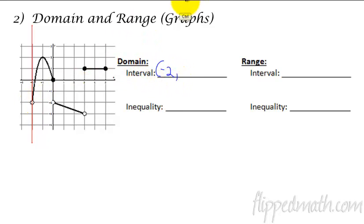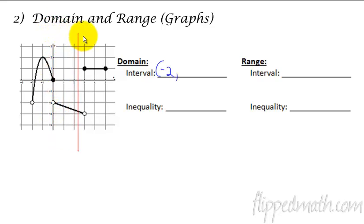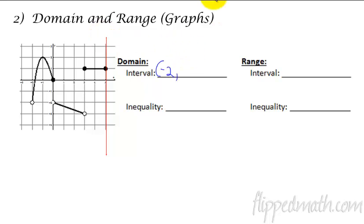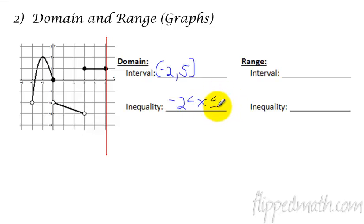Then I continue until I get — there is a break there, but there's not a break in the x values. This x value and that x value are still the same thing, so there's never a break. And then I get all the way to here. I have an open circle and a closed circle, but there's no gap in x values. And then this is where it stops — at the number 5. When we get to 5, that is where it stops, and it's a closed circle, so I do a bracket. So the inequality is: negative 2 is less than x, which is less than or equal to 5.